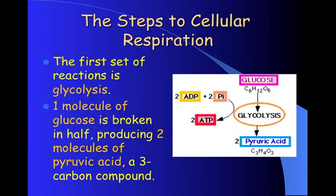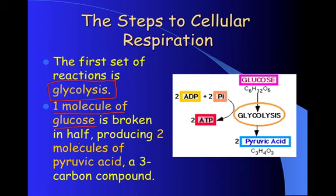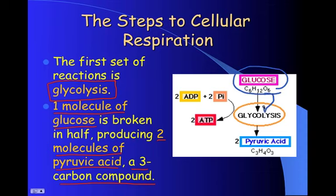Step one: glycolysis. One molecule of glucose is broken in half and produces two molecules of pyruvic acid. Pyruvic acid is a three-carbon compound. Looking at the diagram, glucose goes into glycolysis; two molecules of ATP are used to fuel this process, and the end result is two pyruvic acids.